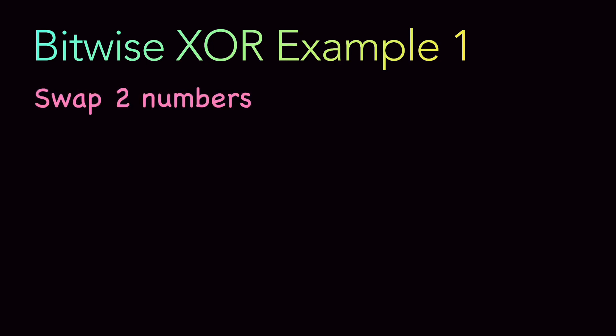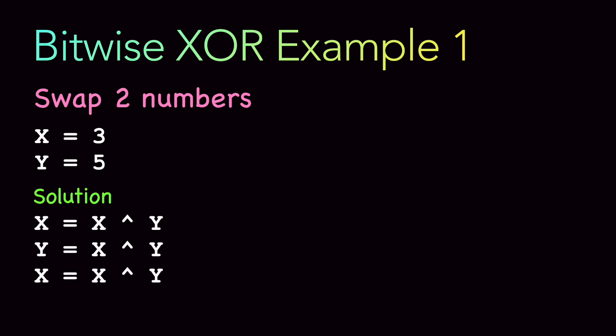Say you want to swap two numbers: X equals 3 and Y equals 5. Obviously you can use a temporary variable to swap them, and there are multiple ways to do it, but let's see how to solve it using XOR. The solution: first do X = X XOR Y, then do Y = X XOR Y, then do X = X XOR Y again, and this will swap the two numbers.